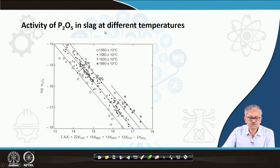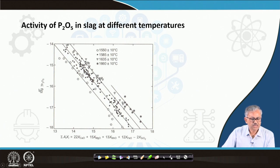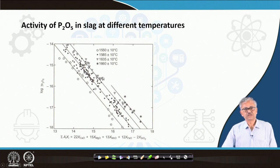The activity of P₂O₅ in slag at different temperatures can be evaluated. The slag basicity is defined as a weighted summation of basic oxides — with a high weighting factor for CaO, then MnO, then FeO, and SiO₂ as the acidic oxide. Activity of P₂O₅ really decreases with increasing basicity, and it is also a function of temperature. Researchers have done extensive activity calculations for basic slag at different temperatures.